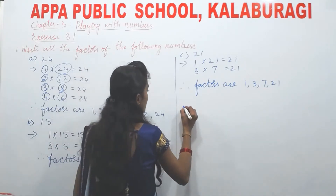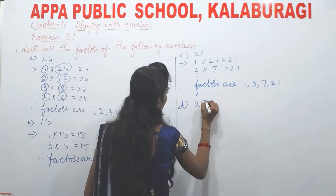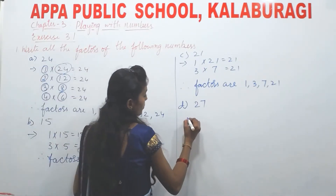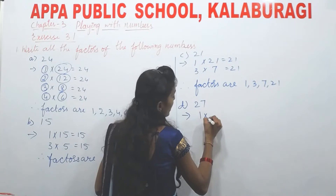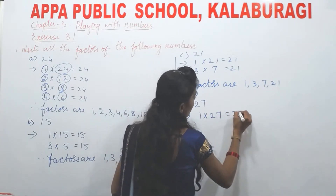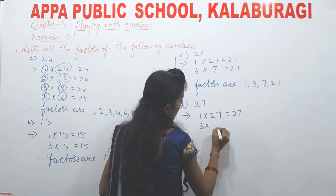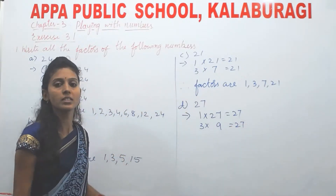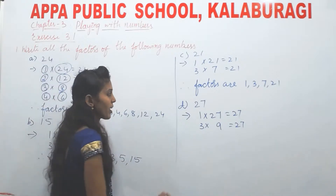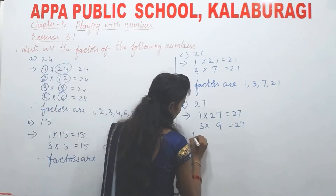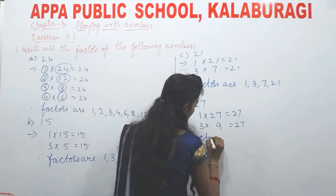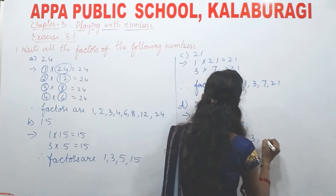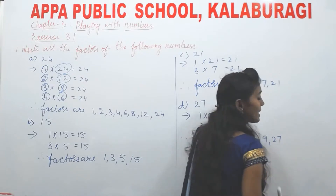Next is 27. Same way: 1×27=27, 3×9=27, 9×3=27, 27×1=27. So how many factors? Therefore the factors of 27 are 1, 3, 9, and 27.